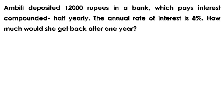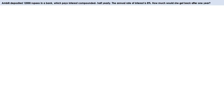Today let us learn the next section: Changing Times. While computing compound interest, interest is added to the principal after every year. There are schemes in which interest is added after every six months — this is called half yearly compounding. Let us take an example: Ambly deposited 12,000 rupees in a bank which pays interest compounded half yearly. The annual rate of interest is 8%. Since interest is compounded half yearly, interest is calculated twice a year. Since interest is 8% per year, it is 4% for six months.